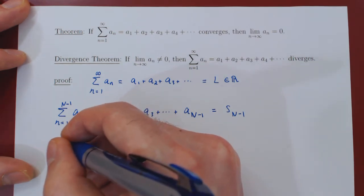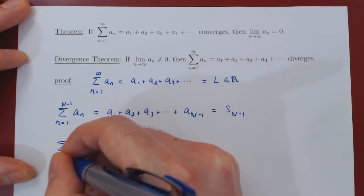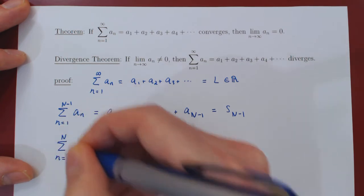Let's now look at the other truncated sum, but now summing up to one additional term, so up to uppercase N.